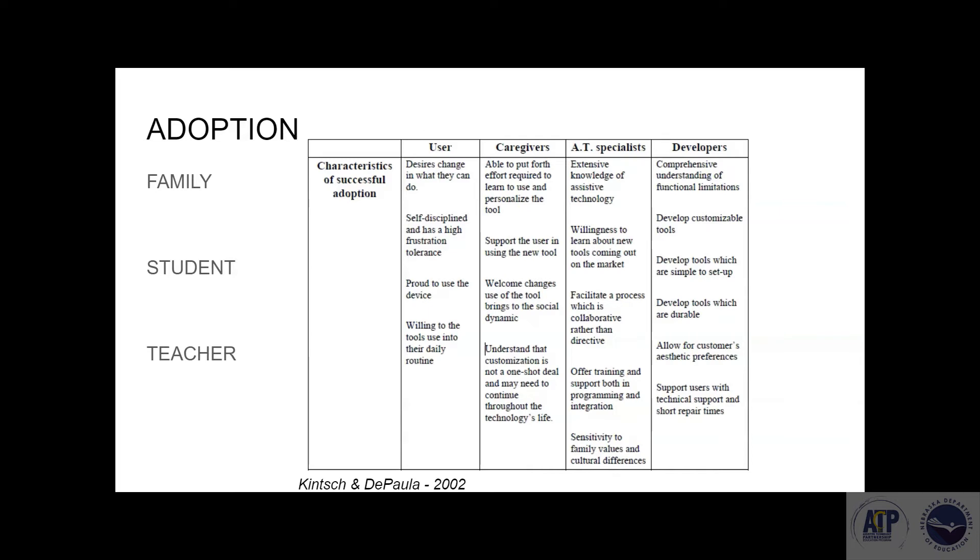We can see with successful adoption, the user has to want change. They have to have some type of frustration tolerance. If you have a student who picks up a new iPad game and doesn't click around or figure out how to play it and just says, this is dumb, I'm not going to use it, you probably have that student who's not going to be able to troubleshoot their assistive technology. So you might want to rule some things out in consideration because it might be more complex than the student is willing to deal with.